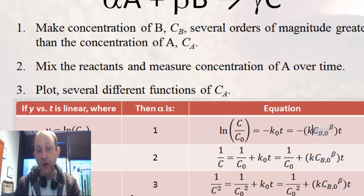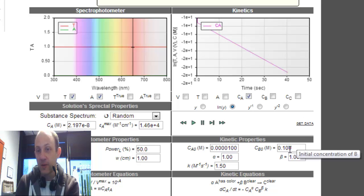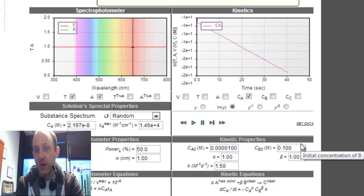So, in order to find the true K, in this case we'd find the slope, divide it by point one, because beta is one, so it just doesn't change that at all. So, it would just be that slope times 10.